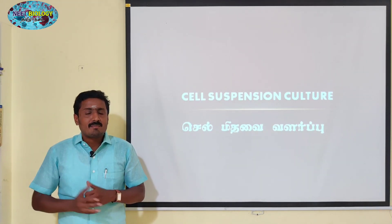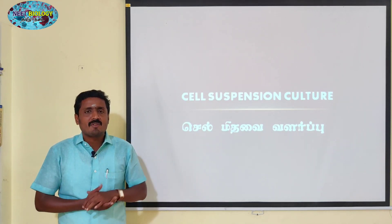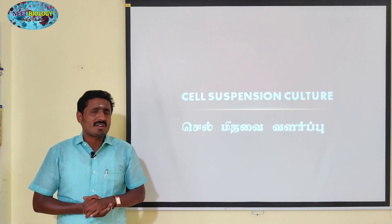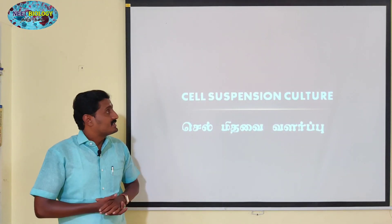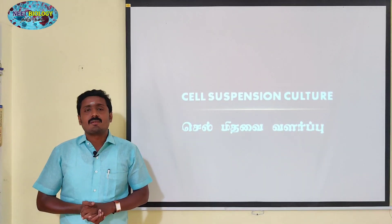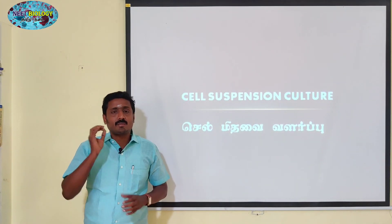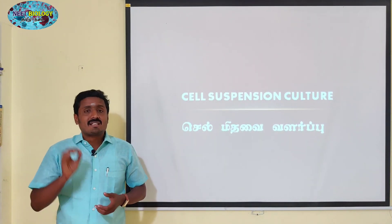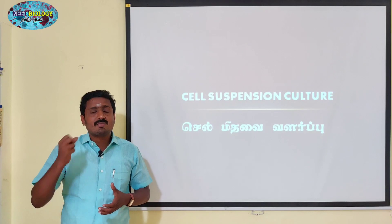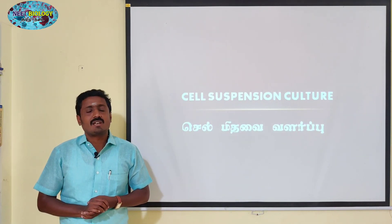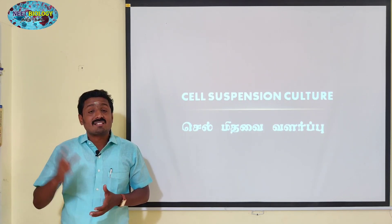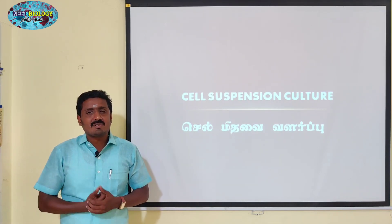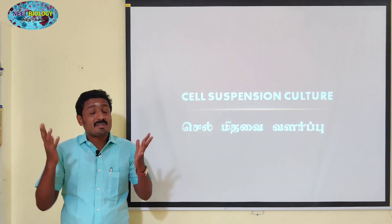In Cell Suspension Culture, there is a Callus. The Callus is a hardening, and it has the same quality. We have a different type of cell suspension which produces secondary metabolites. If you use a different type of cell suspension, you can produce secondary metabolites in large scale, and we can do it with commercialization.